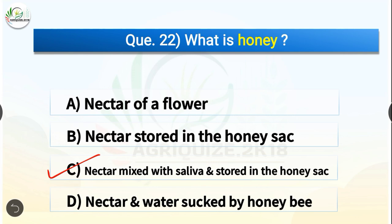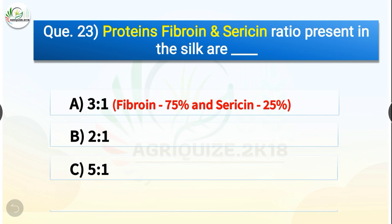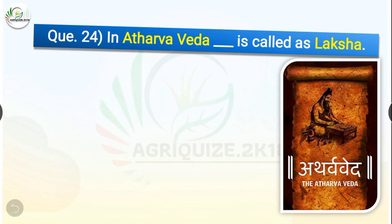Question number twenty-three: Proteins fibroin and sericin ratio present in silk are dash. The options are 3:1, 2:1, 5:1, or 1:1. The correct answer is option A — 3:1. Proteins fibroin and sericin ratio present in silk are 3:1; fibroin is 75% and sericin is 25%.